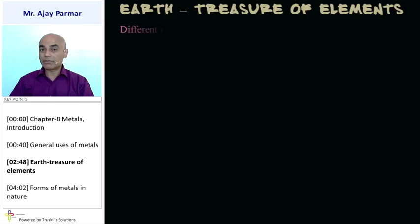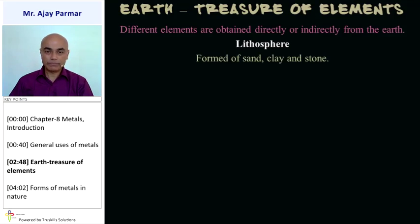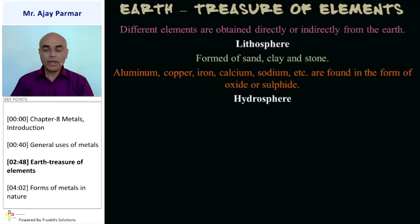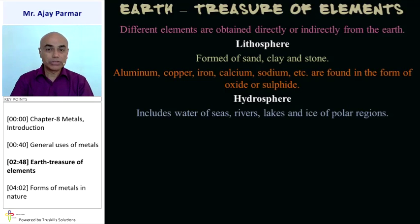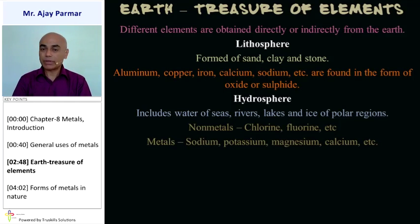We consider that the earth is a treasure of all the elements. Different elements are obtained directly or indirectly from the earth. The various spheres of the earth from which we obtain minerals: the lithosphere, which is formed of sand, clay, and stone — metallic elements like aluminium, copper, iron, calcium, and sodium are found in the form of their oxides or sulfides in the lithosphere. The hydrosphere includes all water bodies — seas, rivers, lakes, and the ice of polar regions. Non-metals like chlorine and fluorine are obtained from the hydrosphere, while metals like sodium, potassium, magnesium, and calcium are obtained from it in the form of their compounds.